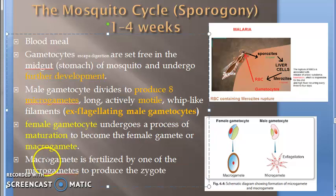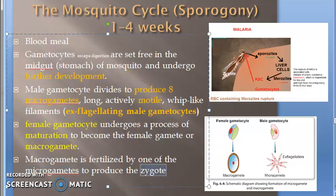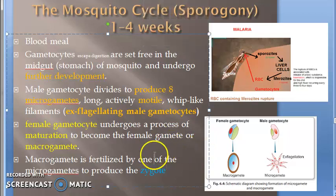Moving on: the macro gamete is fertilized by one of the micro gametes to produce a zygote. One thing you should know — in the humans, the female gametocytes will be more numerous. And since one male gametocyte becomes eight micro gametes, it's all compensated for.